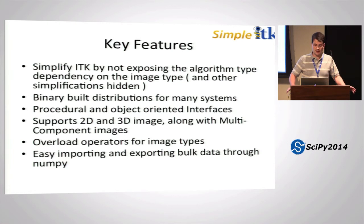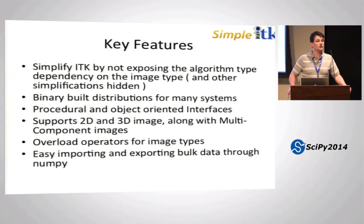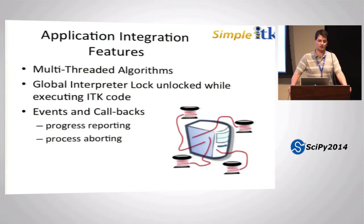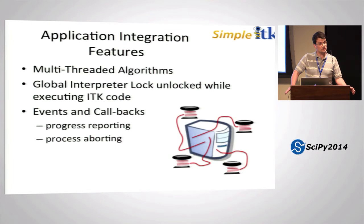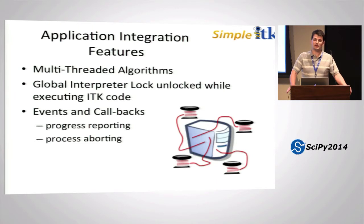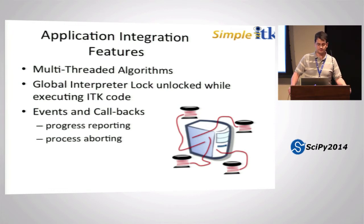We provide overloaded operators that work on images with additional metadata, constraining operators to only work on images with similar metadata. So to add two images in Simple ITK, they need the same coordinate system in addition to the same shape. We also support easy exporting to NumPy. Most algorithms are multi-threaded, and the GIL in Python is unlocked when running ITK, enabling easy use of Python's threading library. We also support events and callbacks for progress reporting and aborting long-running algorithms.